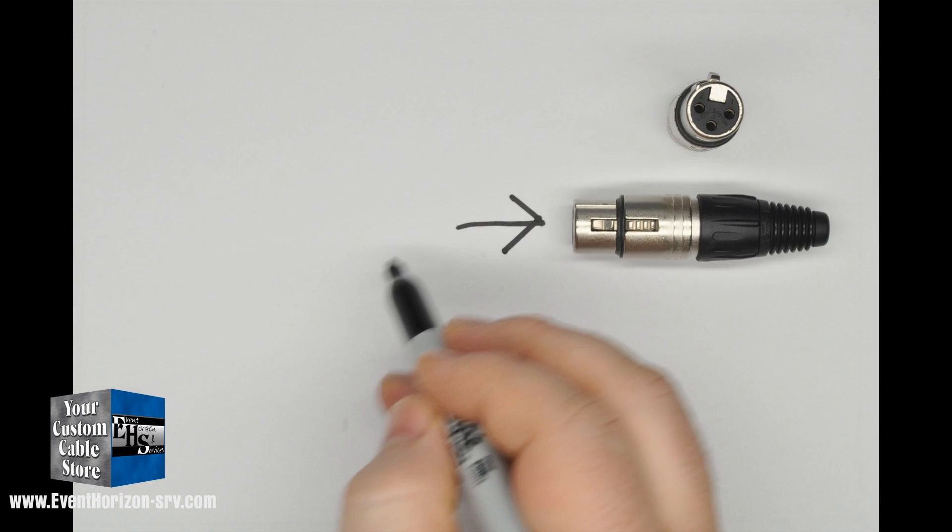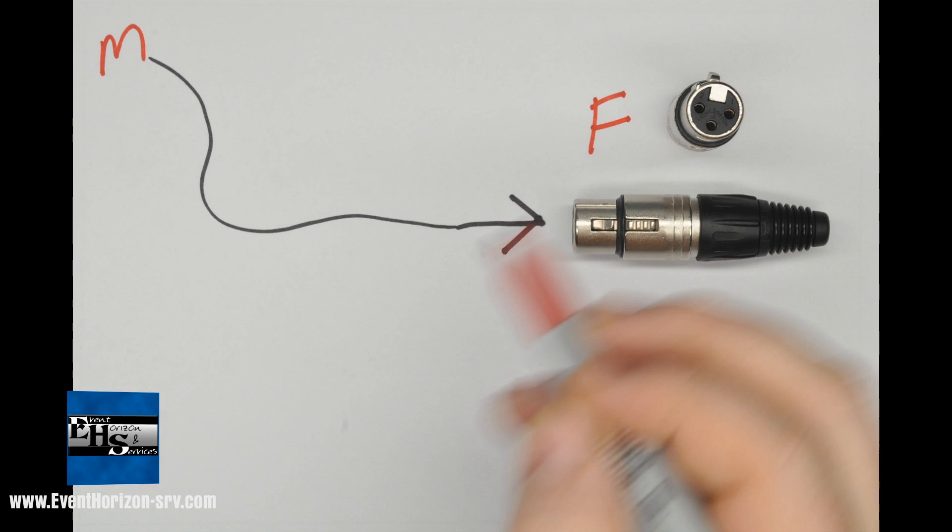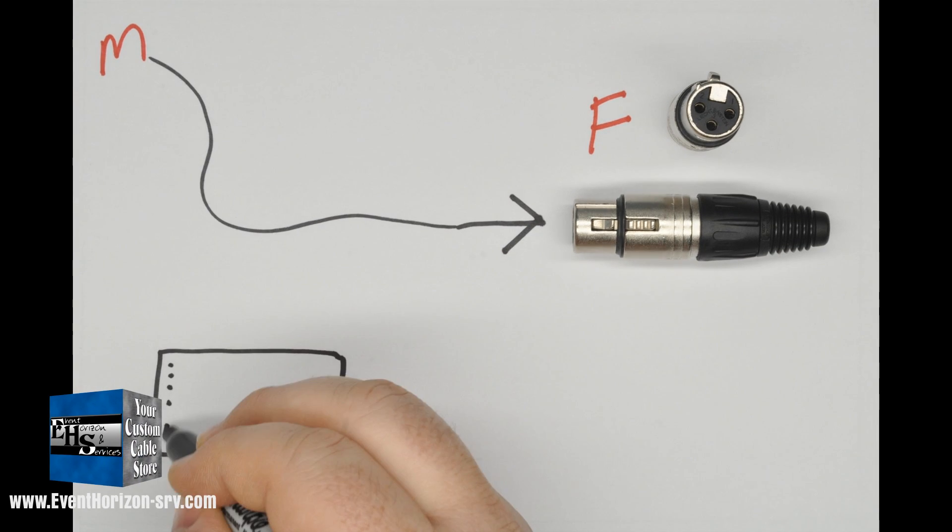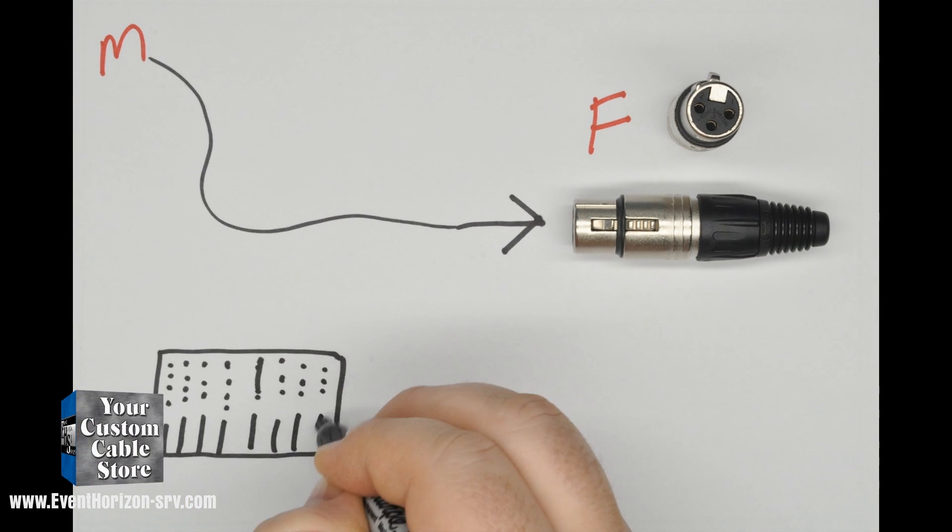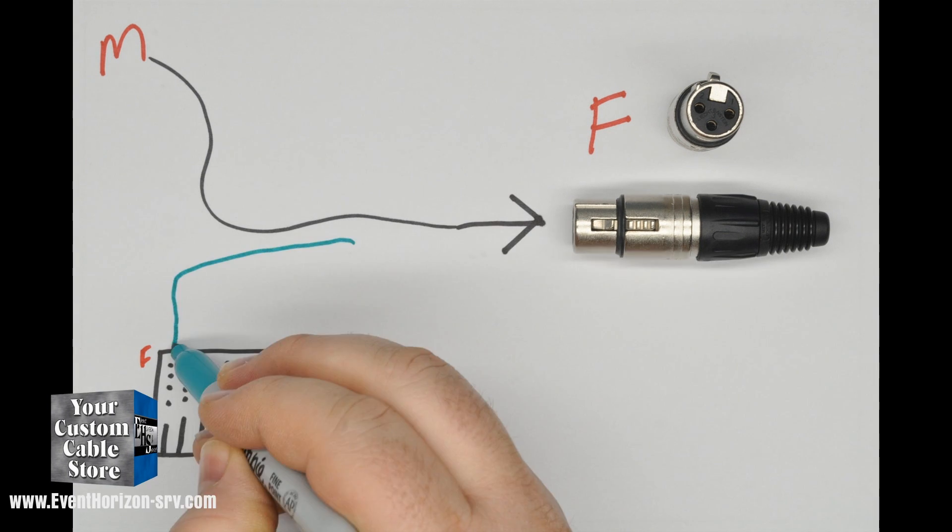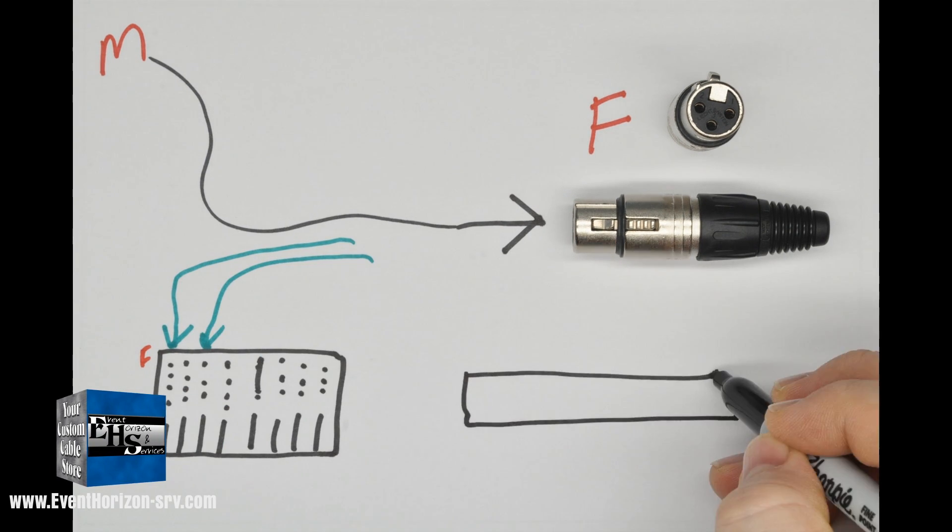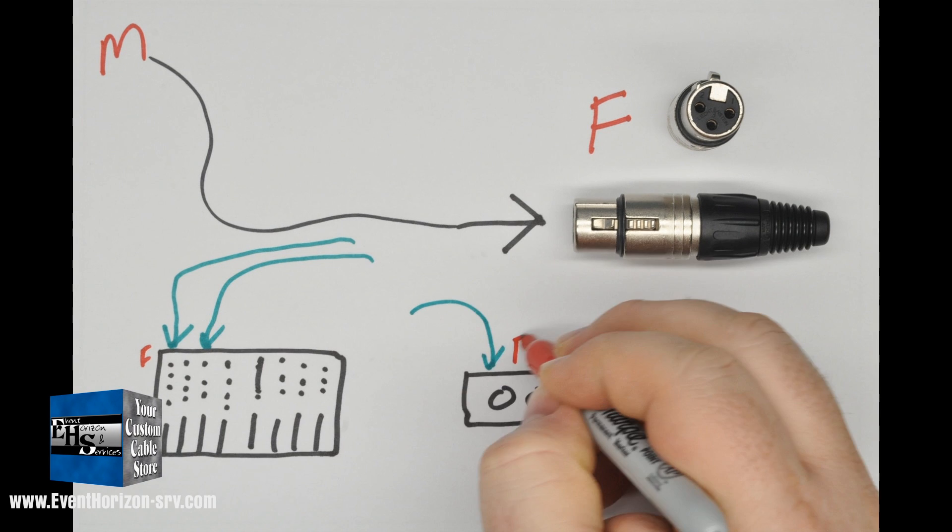The female connector is the input connector, so the female receives or gets signal from the male. Console inputs and gear inputs use female connectors.